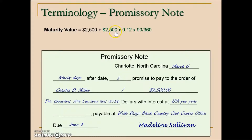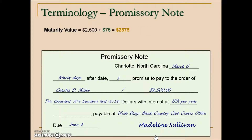The interest would be the principal times the rate as a decimal. Because the term is 90 days, we need to express it as a fraction of a year. There's no mention of exact interest, so the assumption is it's ordinary or banker's interest, so we use 360. Calculating that and adding, we end up with a maturity value of $2,575.